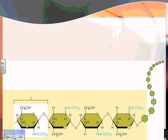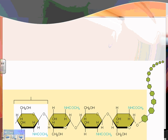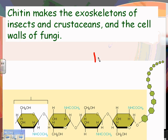Chitin looks like glucose to glucose to glucose — the same chain structure — except it contains nitrogen as well. It is a structural carbohydrate. Now, what's the difference between an exoskeleton and an endoskeleton? An endoskeleton is a skeleton found inside the body — like your bones.